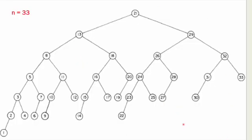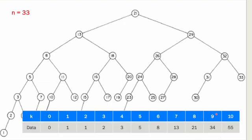Fibonacci Search uses three formulas. Suppose n is equal to 33. We find the greatest Fibonacci number less than or equal to n+1, which is 34. So FK = 34, which is the Fibonacci number at location 9, meaning K equals 9. Then FK-1 equals 21, so the first comparison is made at the 21st position.